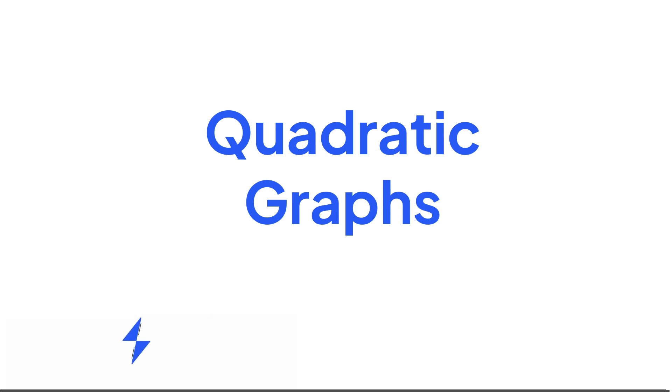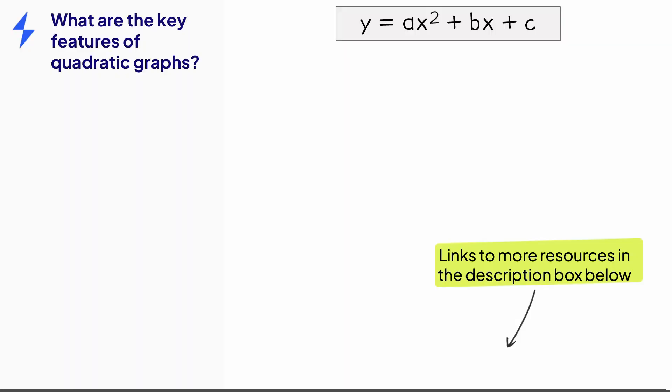In this video, we'll be looking at quadratic graphs. The general form for the equation of a quadratic graph is written in the form y equals ax squared plus bx plus c.